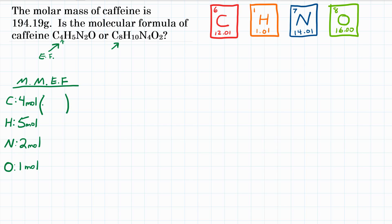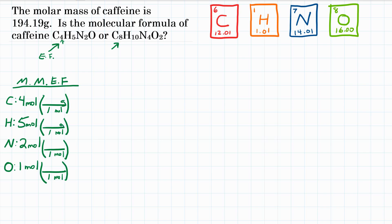We want to turn those moles into grams because we want the molar mass. We're going to multiply these by conversion factors — the molar masses from the periodic table. Moles will be on the bottom to cancel out, and grams on top. For carbon, it's 12.01 grams per mole; for hydrogen, 1.01 grams per mole; for nitrogen, 14.01; and for oxygen, 16.00.